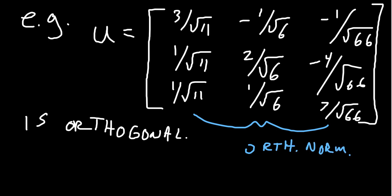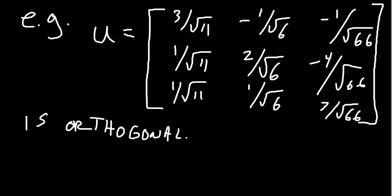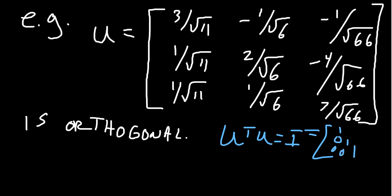One way to show it's orthogonal is to check the columns form an orthonormal set. The other way is to take U transpose U and show it equals the identity. I'm going to encourage the viewer to do that — pause the video right now and check that U transpose U gives you the 3×3 identity, with 1s on the diagonals and zeros everywhere else.